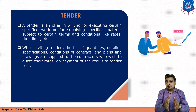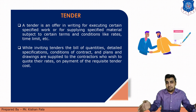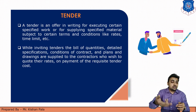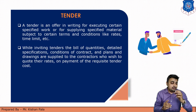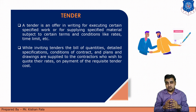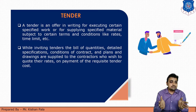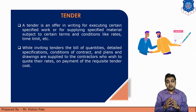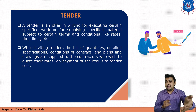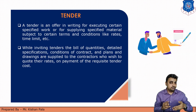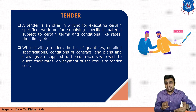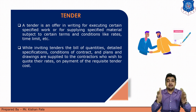For example, the work should be done within three or four years — that should be mentioned in the offer. There is also mentioned the total amount of the project. While inviting tenders, the Bill of Quantities is provided, which mentions the total quantity of all the activities of that work, along with details, specifications, conditions of the contract, and plans and drawings supplied to the contractor who wishes to quote their rates upon payment of the requisite tender cost. So the client offering a tender must mention terms and conditions, bill of quantities, plans, specifications, and other required documents for that work.